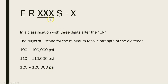If we had three numbers instead, it's basically the same thing — those three numbers are telling you the minimum tensile strength of this electrode. So if you were to see something like ER100S-whatever, it would tell you that the minimum tensile strength is 100,000 pounds per square inch. If it was 110, so ER110S-whatever, it would be 110,000 pounds per square inch.